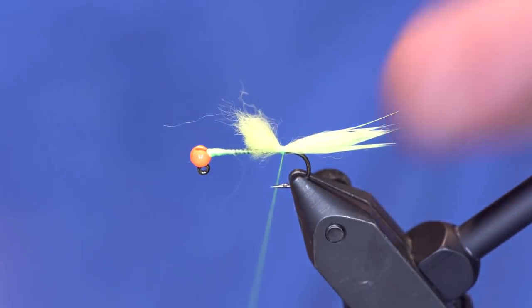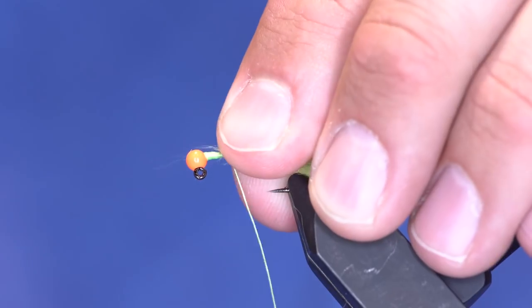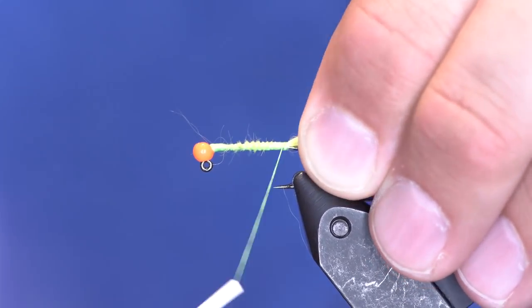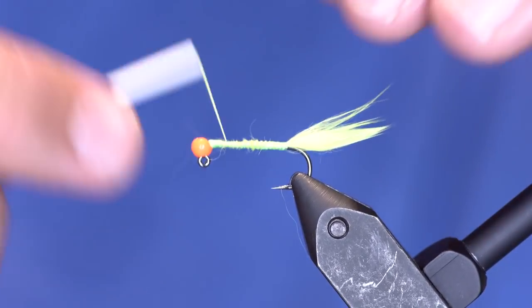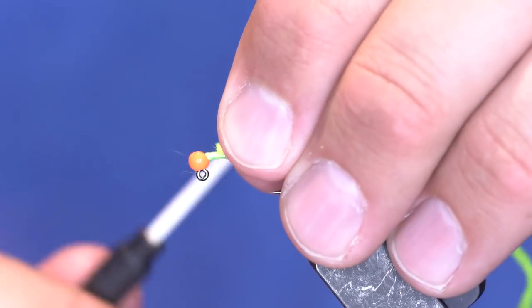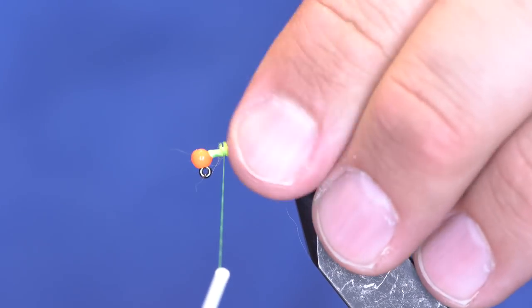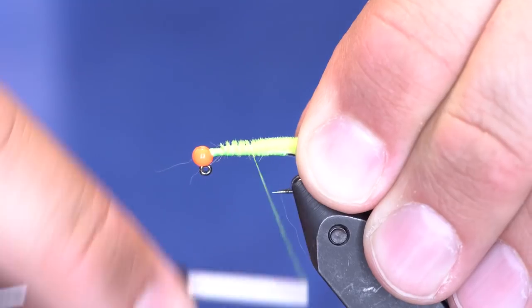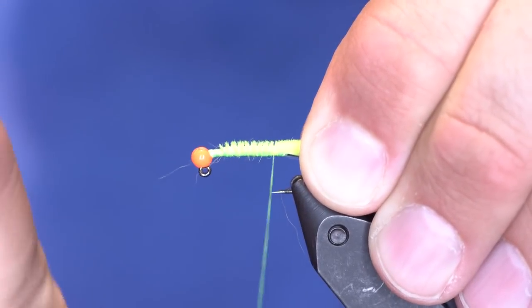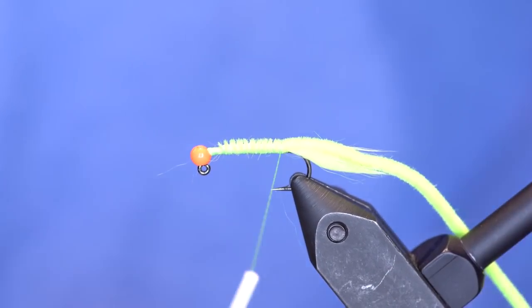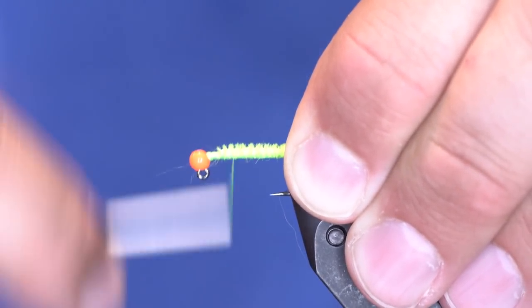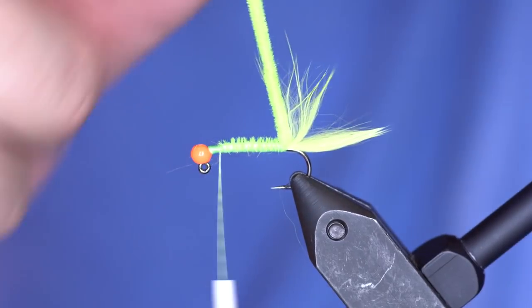So I've got that right there and just wrap that forward. It doesn't really bulk up too much. From here, about up here by the bead, there's going to be a little thorax on this, so I don't have to put it right behind the bead. But I'm going to take some more chartreuse-colored material—this is ultra chenille—and I'm just going to wrap it the length of the body and then wrap this forward up the fly.